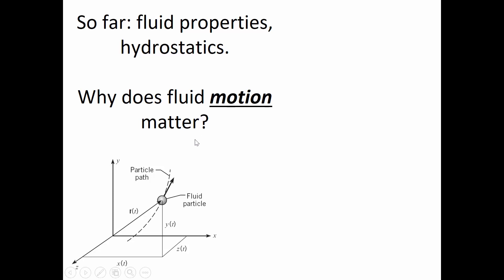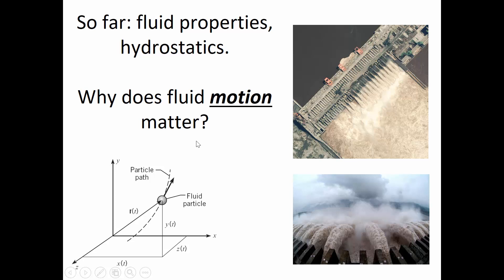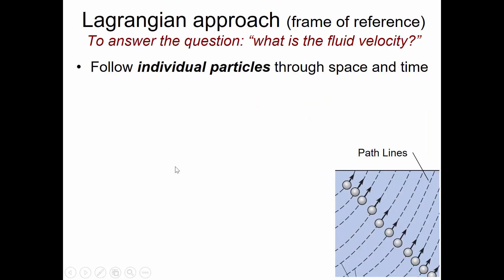Fluid motion matters because most infrastructure — like dams — involves water flowing through conduits. To address how water behaves in those situations, we have to either keep track of fluid particles or elements of water. The Lagrangian approach to fluid mechanics involves looking inside a window and keeping track of actual particles inside that window, drawing the path those particles are taking.